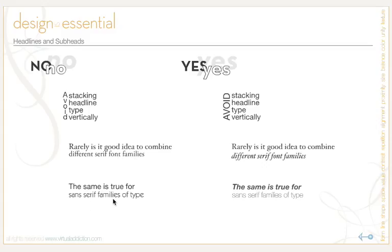The same is true for sans-serif families of type. The sans-serifs may be just different enough to look strange and odd without you immediately knowing why. If you want to combine sans-serif font families, use something like a bold and a light version of the same font — this works. Mixing two different sans-serif families does not. Hopefully this gave you some ideas of things you can do for your headlines and subheads, and different ways to set and treat them to create a strong and interesting composition.